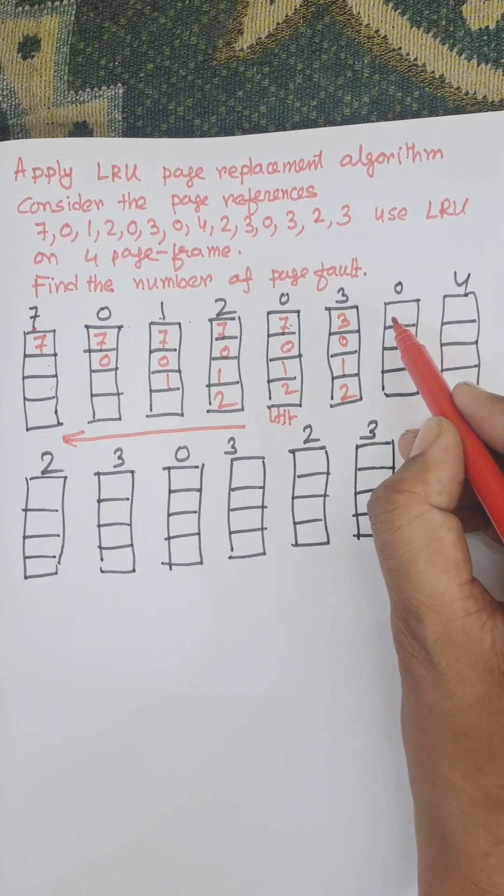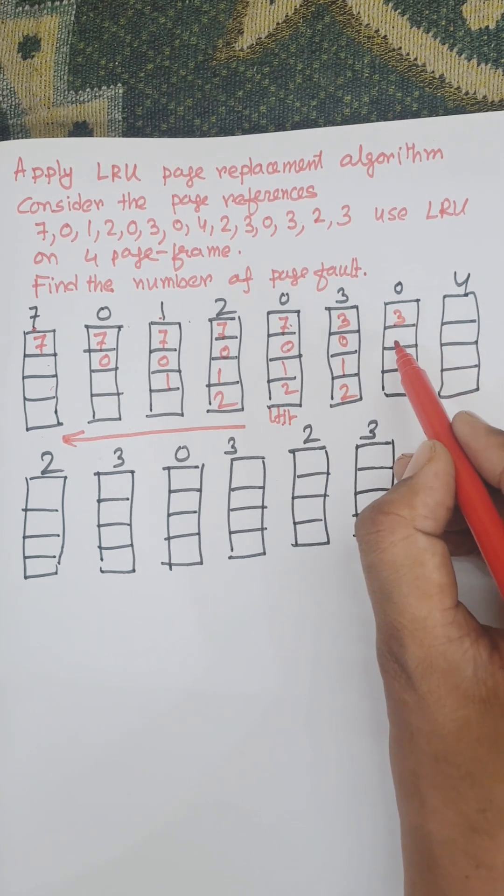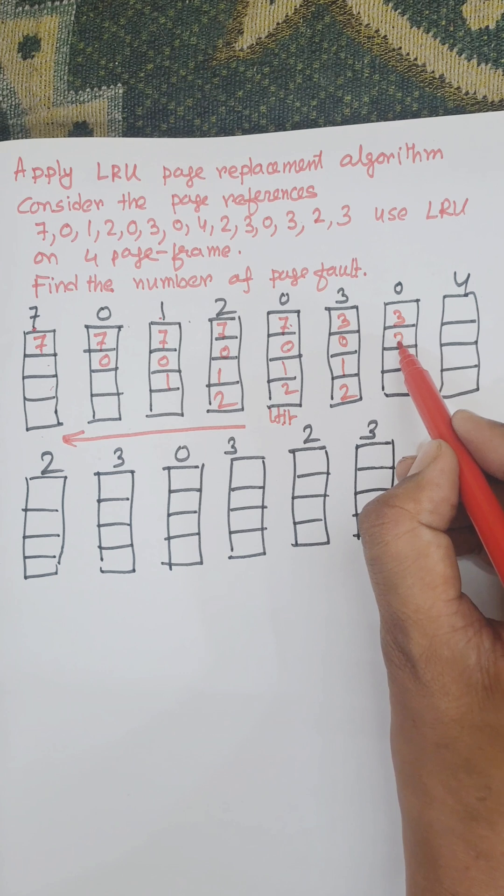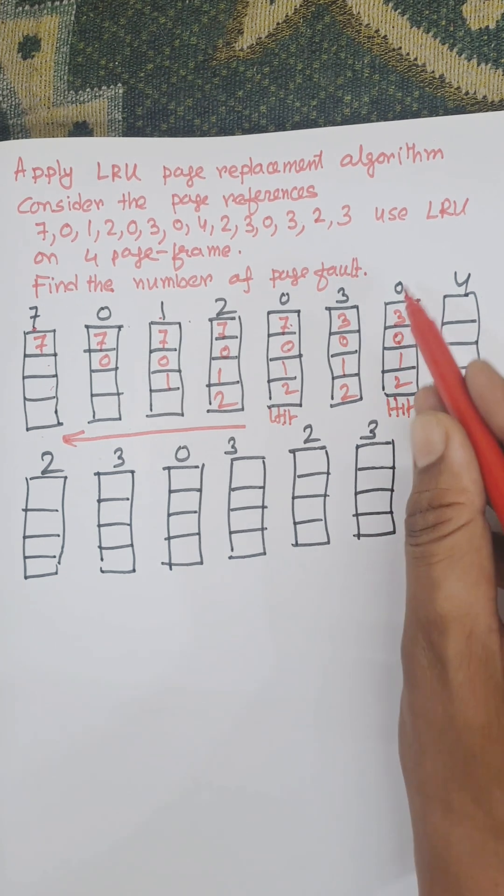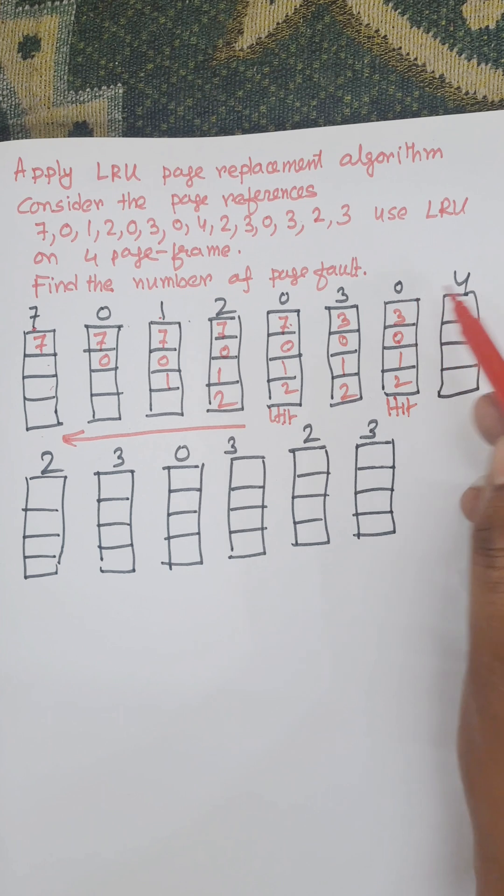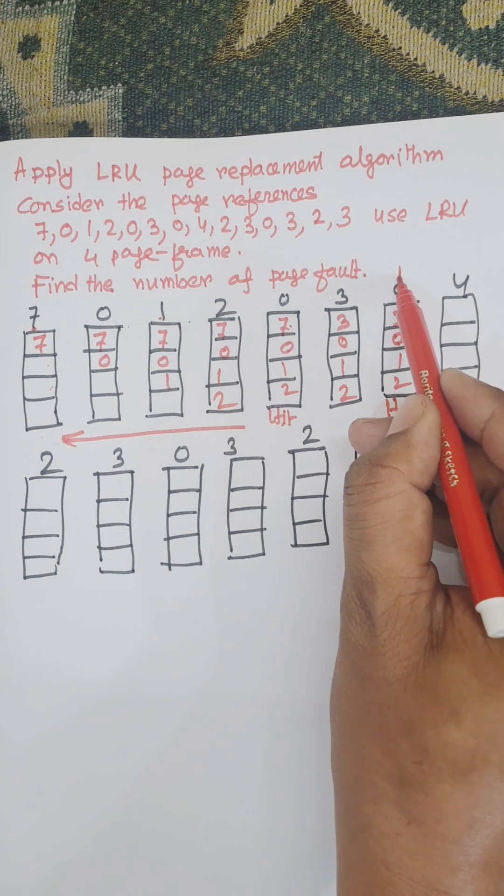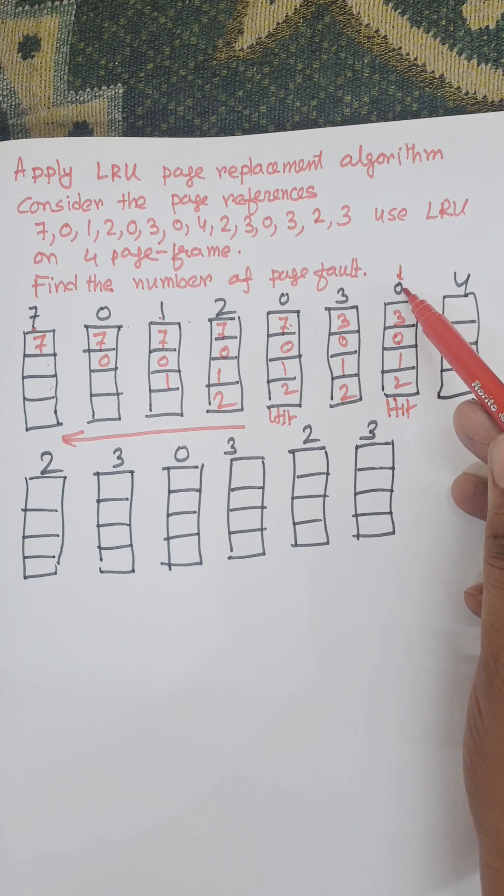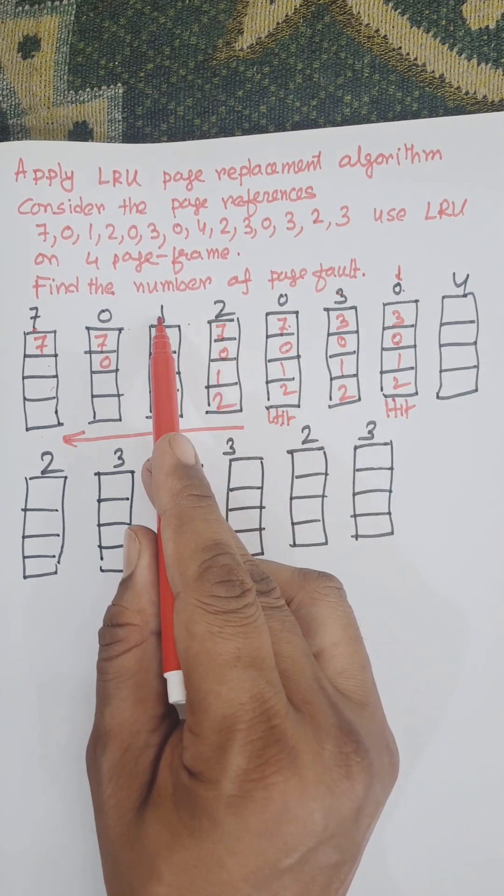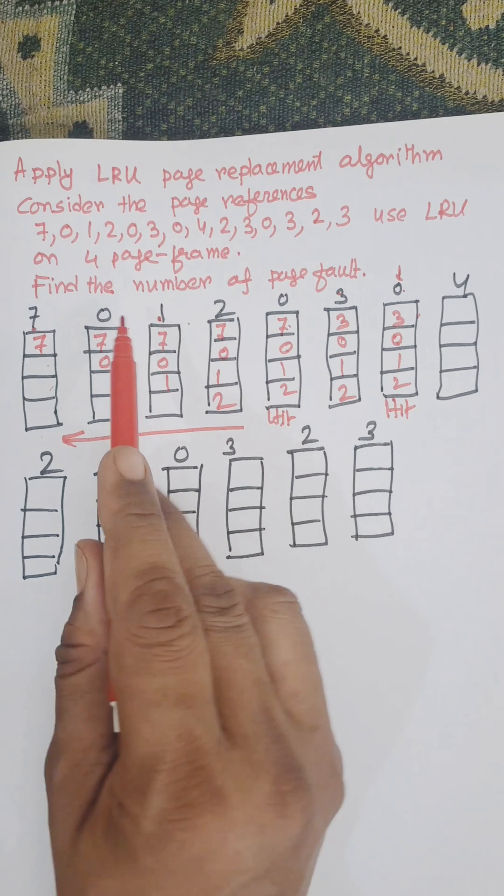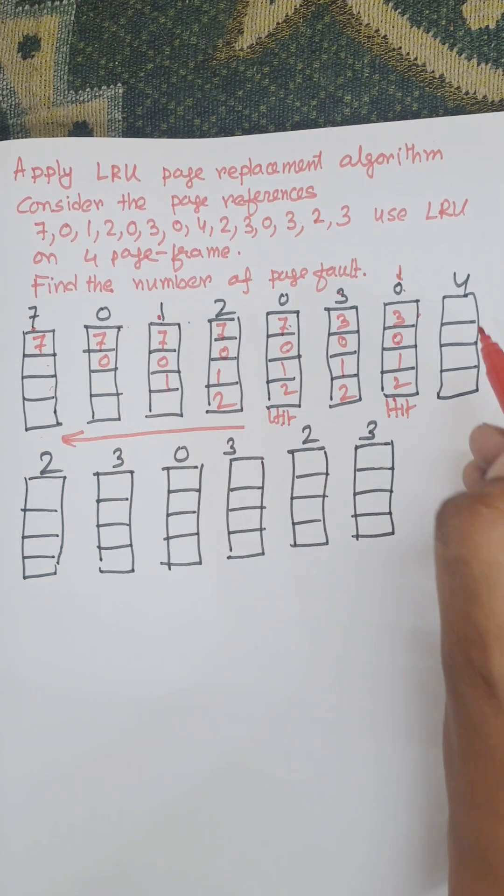Zero is a hit because it's available. Now we need to replace four among 3, 0, 1, 2. Checking backward, zero is here, then three, then two, and one. Among 3, 0, 1, 2, one is the least recently used, so one is replaced by four.